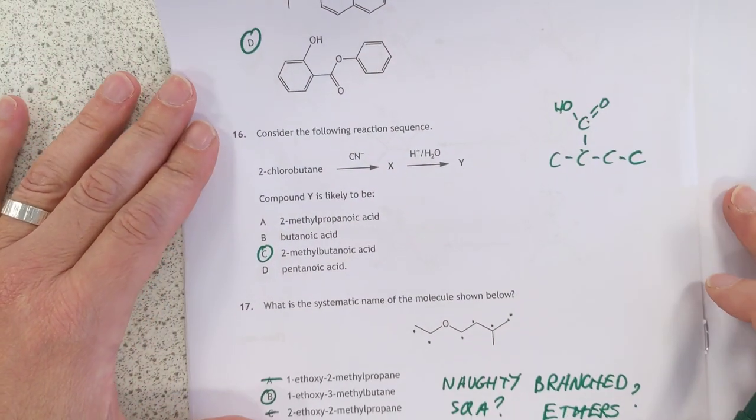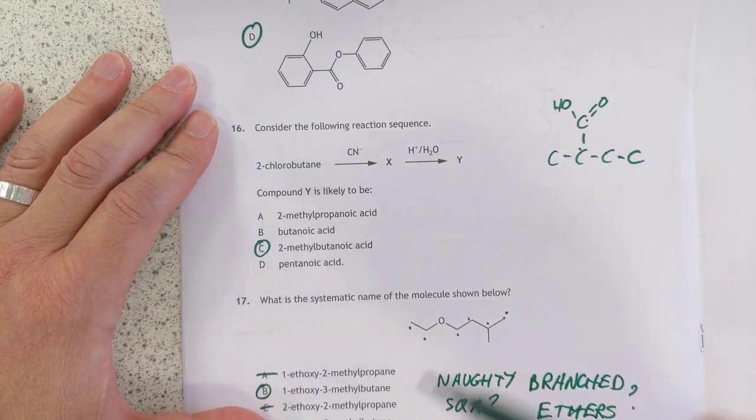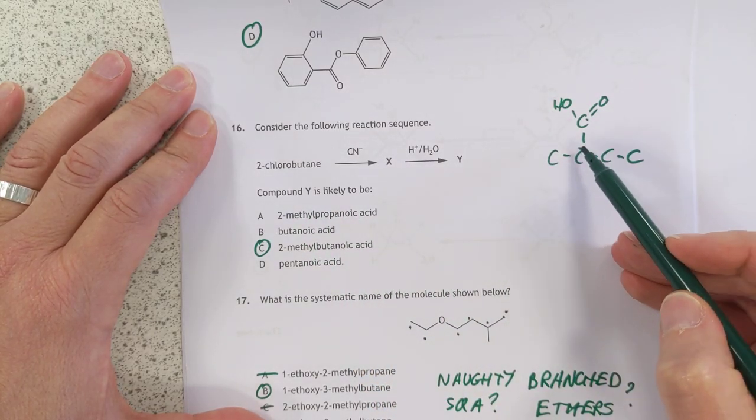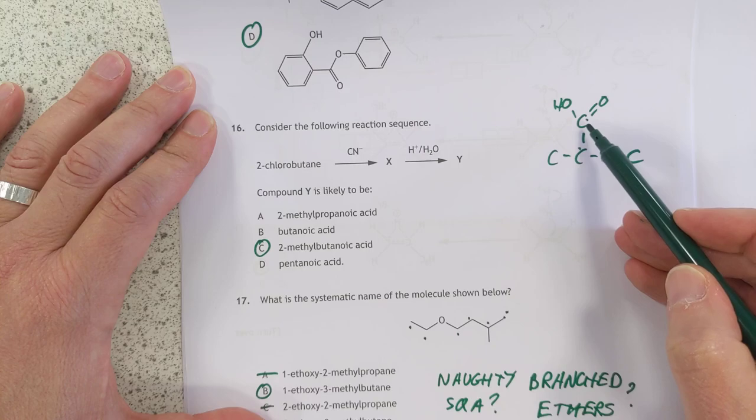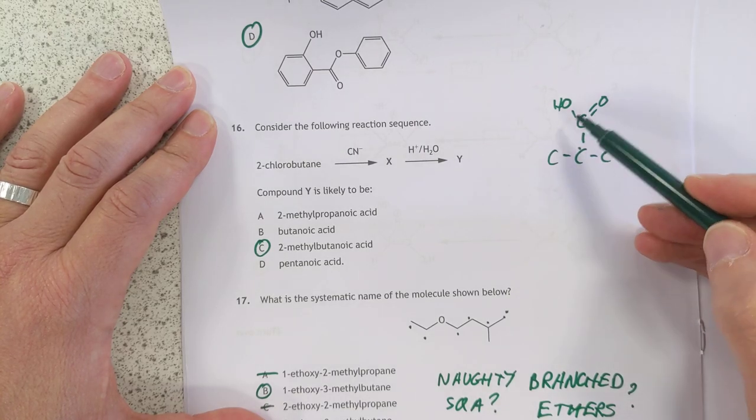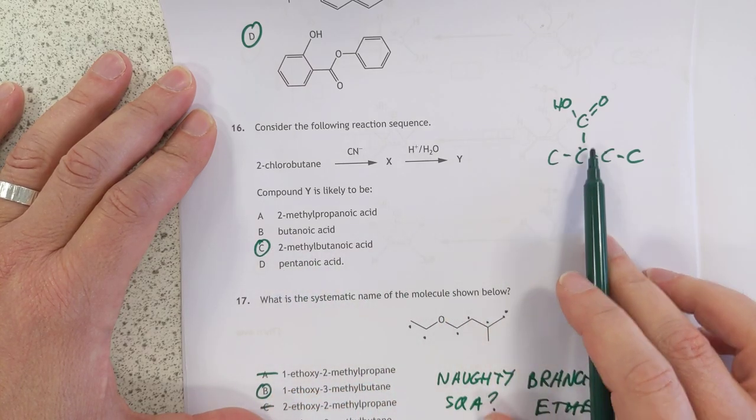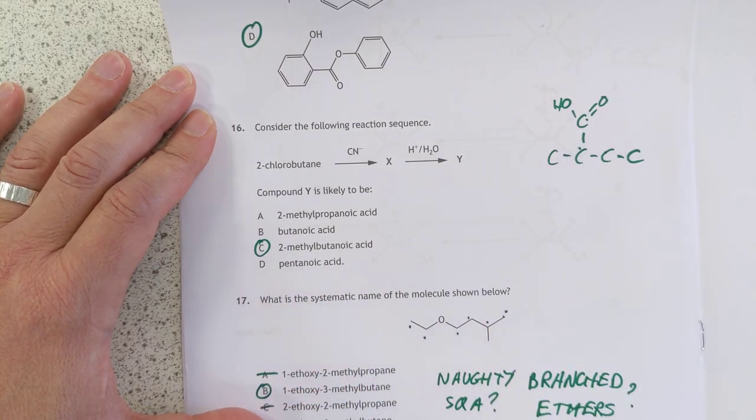Number 16, sorry, it's a reaction sequence. Chlorobutane, yep, you're going to knock the, two chlorobutane, you're going to knock the chlorine off, replace it with cyanide, and then hydrolyze that. You're going to get this molecule here, which is two-methylbutanoic acid, 1,2,3,4-butanoic acid.